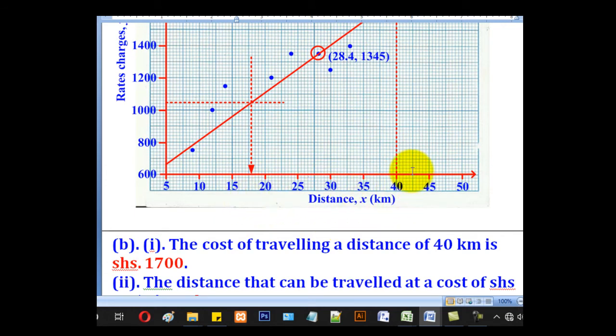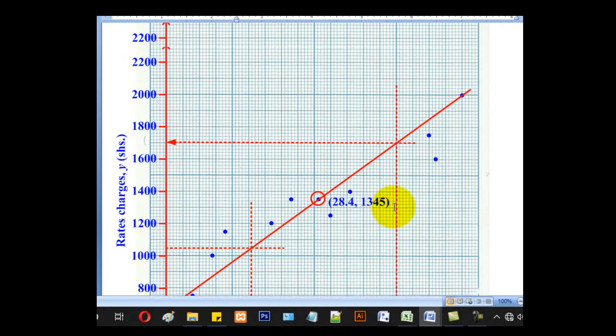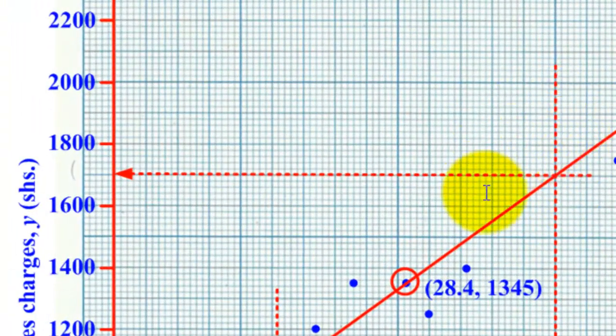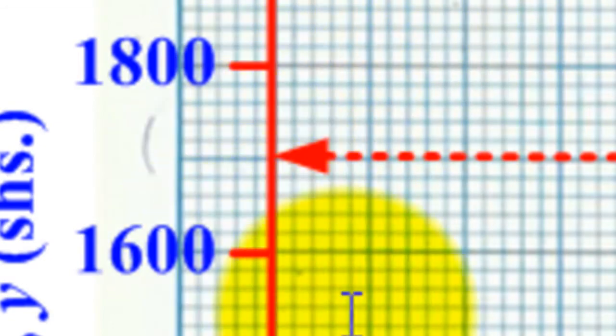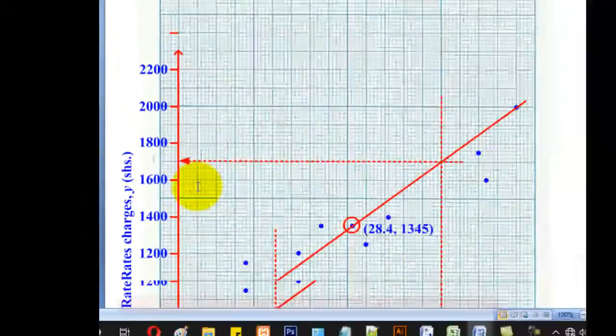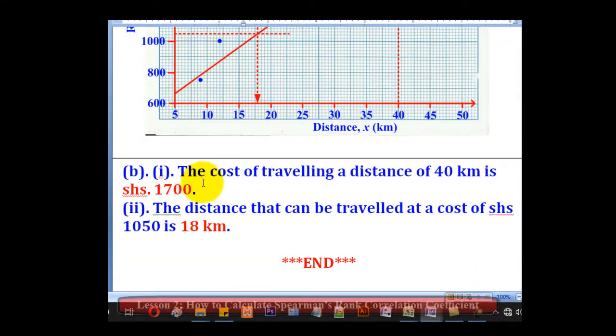So we shall look for 40 here. Go up, take a vertical line upwards until it meets the line of best fit. When it meets that line of best fit, take a horizontal line to meet the vertical axis and read off that point. That will be the value that is required. So in this case, the cost of travelling a distance of 40km is shillings 1,700.